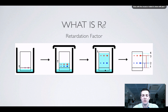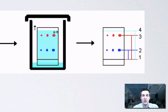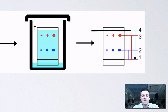Gradually, as time goes by, the solvent moves up the thin layer and takes parts of the mixture with it. Once chromatography is finished, we can measure how far the solvent has travelled. The limit of where the solvent goes is called the solvent front, and we can measure the distance travelled by the solvent from the start line. So the distance from 1 to 4 is the distance travelled by the solvent.